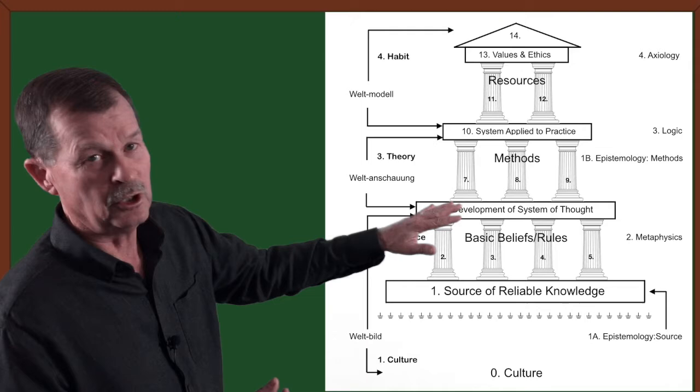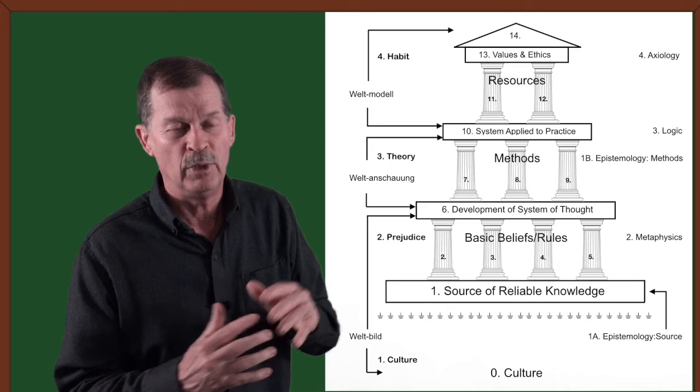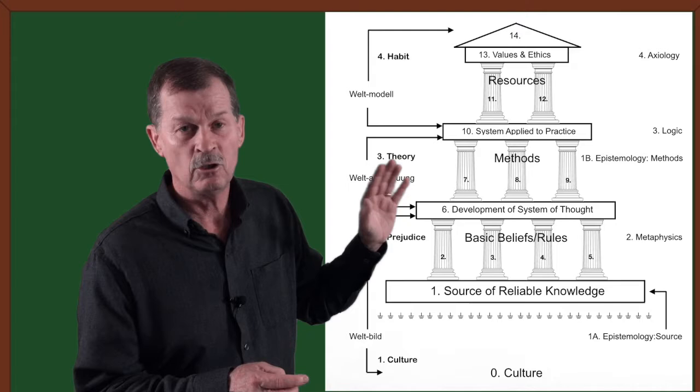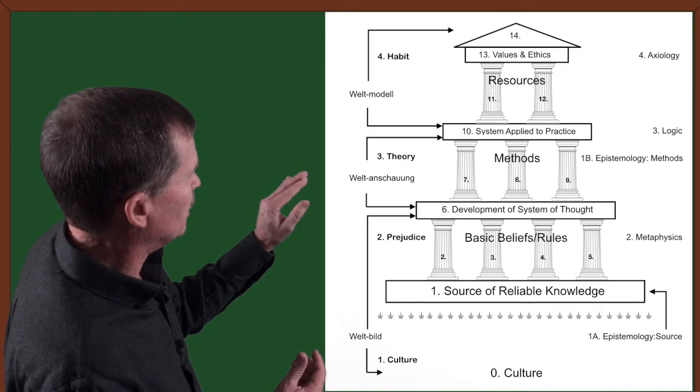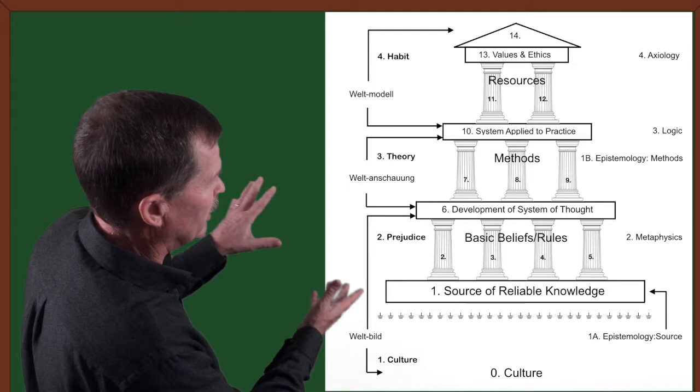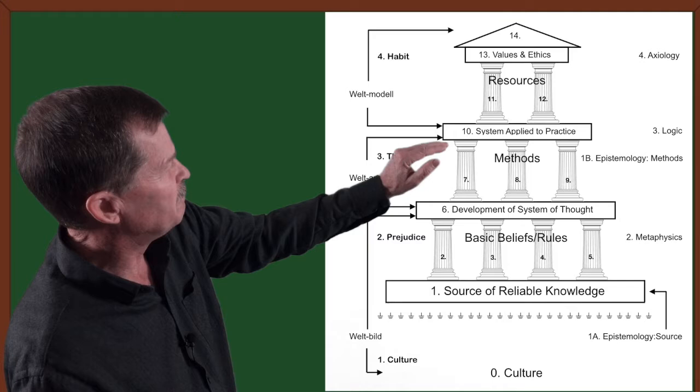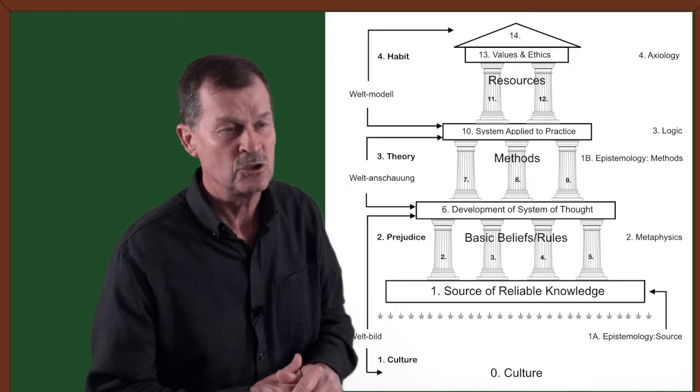But one category that's missing in philosophy is Culture. There is no allowance for culture to influence philosophy. But as Stephen Jay Gould mentioned, the four factors of theory, habit, prejudice, and culture, culture is a big influencer. So how do I incorporate culture into my philosophy?